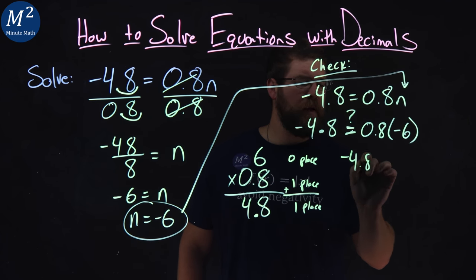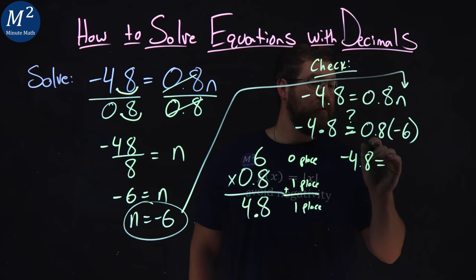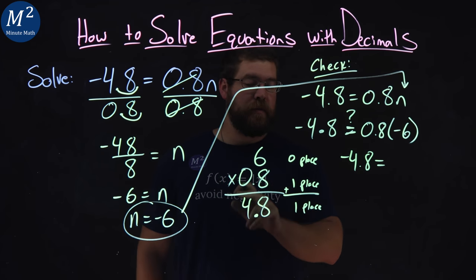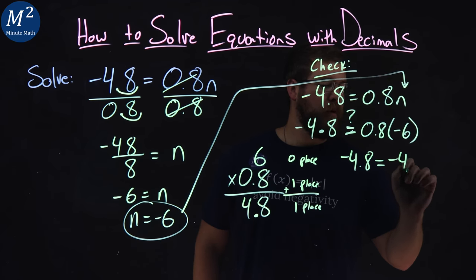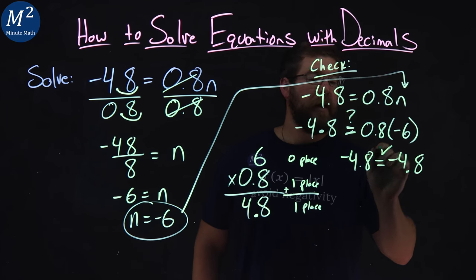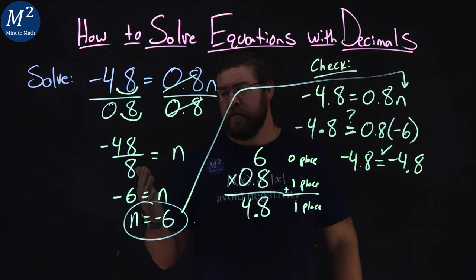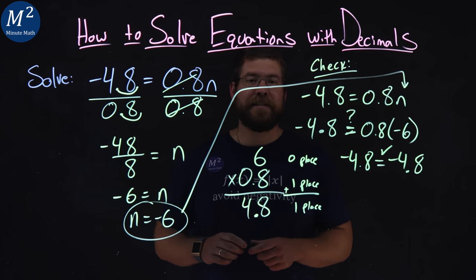So, negative 4.8 on the left, is that equal to 0.8 times negative 6, which comes out to be negative 4.8? And yes, it is. The left and right hand side are equal, confirming that the solution to our equation is n equals negative 6.